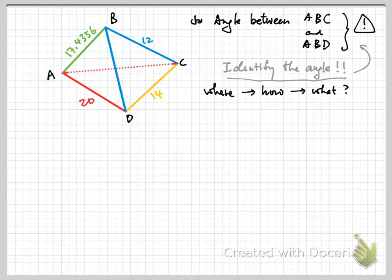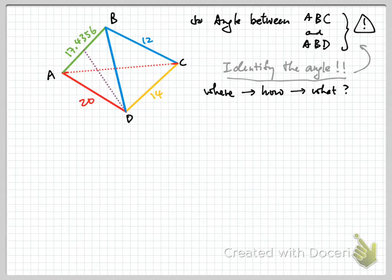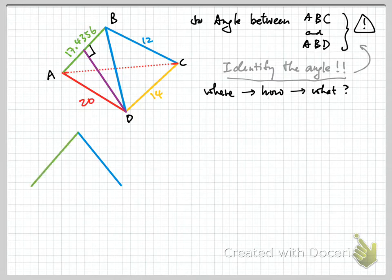For angle between two planes, we find the common line. The common line is the green line — the line of intersection between planes ABC and ABD. Along the common line, we draw perpendiculars all the way to point D. This purple line is perpendicular to the green, yet it lives on plane ABD — so this is a right angle. We can recover that triangle. It's red, green, and blue with a perpendicular line going here.